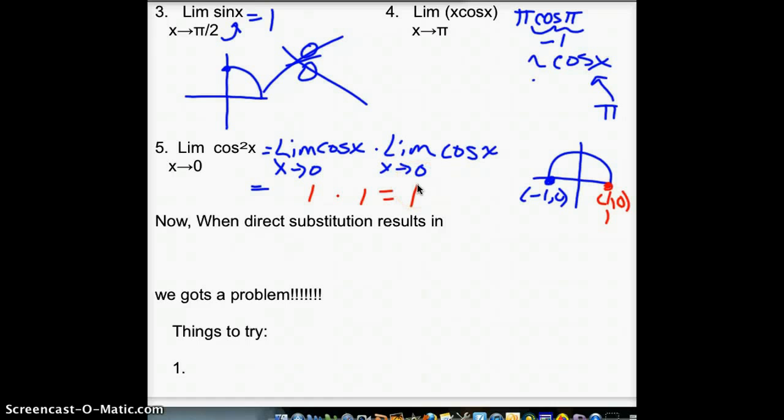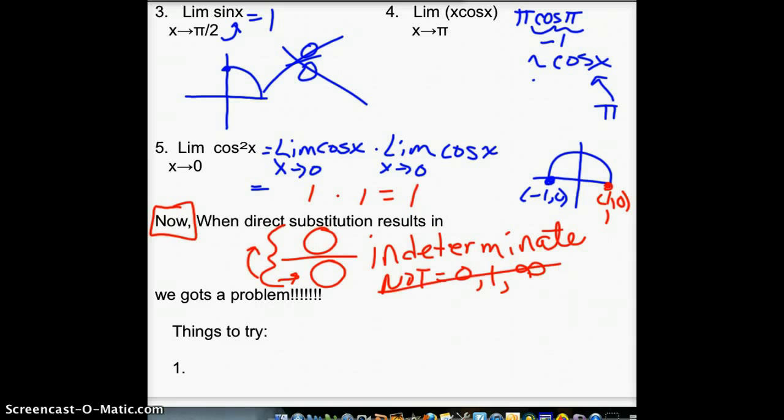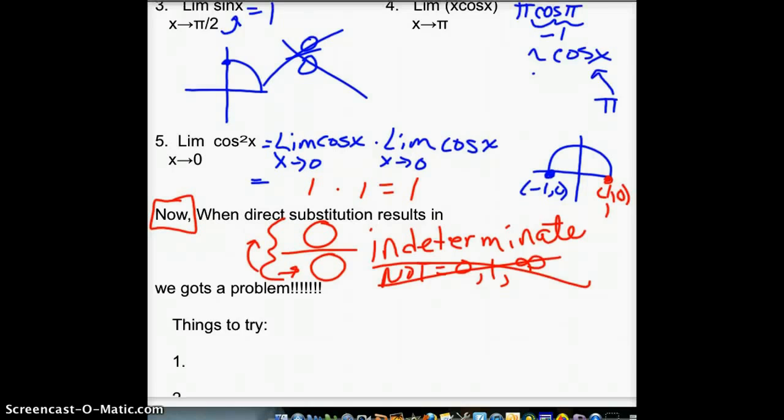Now, here's where we have a problem. I said substitution's great. You should always try it first. But when it results in this, remember we talked in class about how this is called an indeterminate form. You might be thinking, oh, it's 1 because it's the same thing over itself, or it's undefined because there's a 0 on the denominator, or that's infinity because there's an infinite amount of 0s in 0. It's really what we call an indeterminate form. We can't determine what it is. It's not 0. It's not 1. It's not infinity. We don't know what it is. It can't be determined.